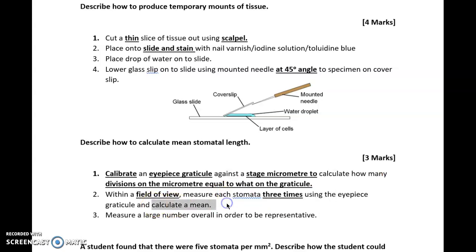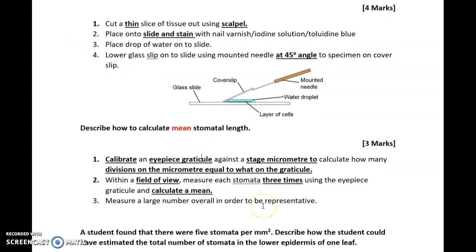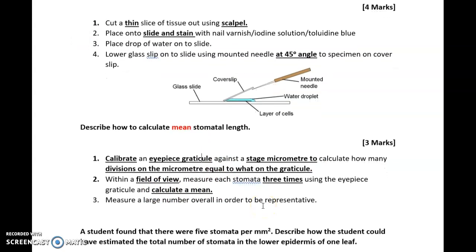Three times to then calculate a mean. Notice that the question says mean stomatal length, so you've got to explain how you get a mean. You can't get a mean from just one reading. Three is a good number to go for. Overall, you need to make sure that you measure lots of different areas and you take a large number of readings so that your results are representative of the main population of cells that you're investigating.